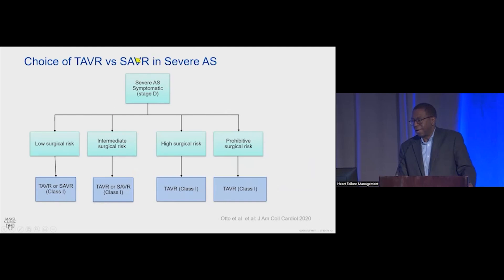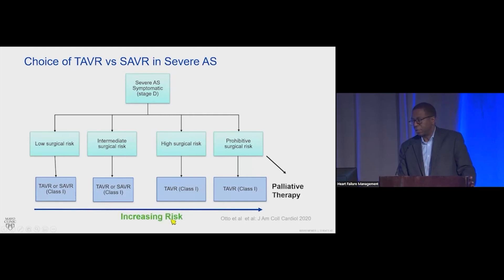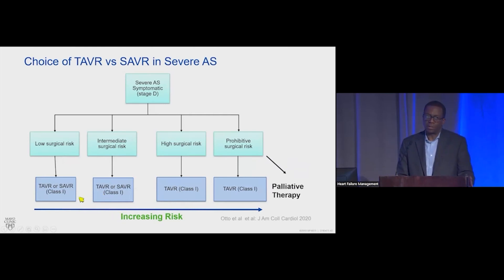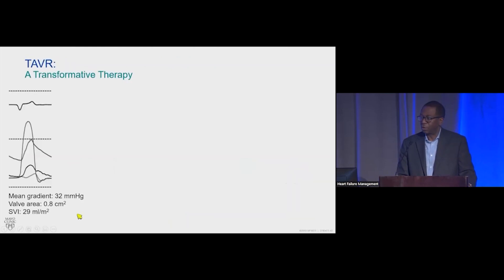Per the 2020 guidelines, for patients with severe symptomatic aortic valve stenosis, TAVR is a class one indication whether you are low surgical risk, intermediate risk, high risk, or prohibitive surgical risk. There are patients more appropriate for palliative therapy, and the discussion gets trickier where some patients are candidates for open-heart surgery — there are factors favoring surgery versus TAVR — but TAVR is a class one indication now even for low-risk individuals.